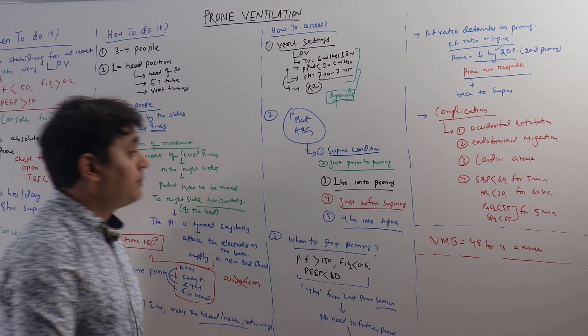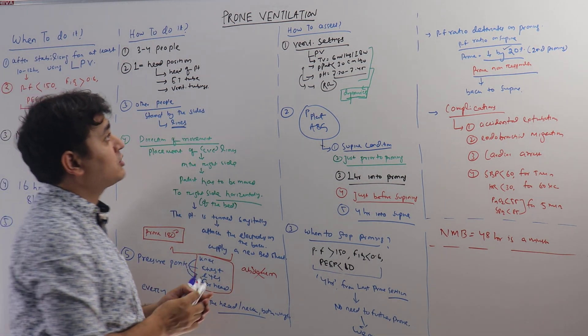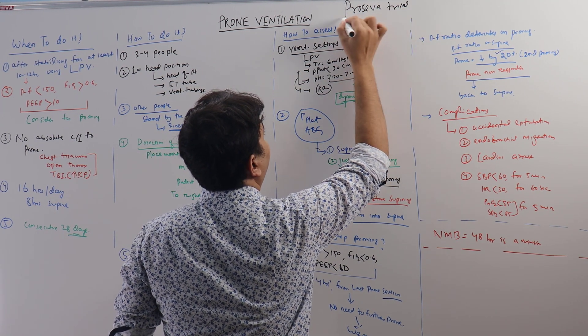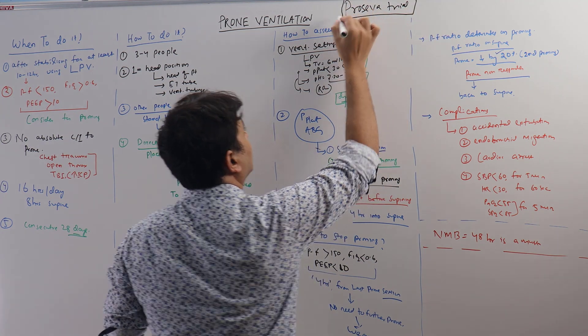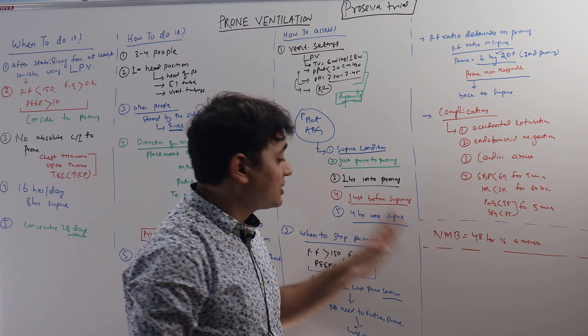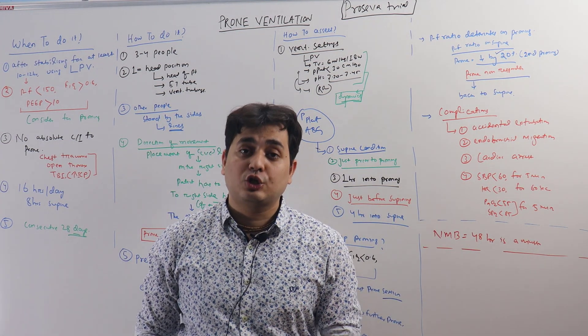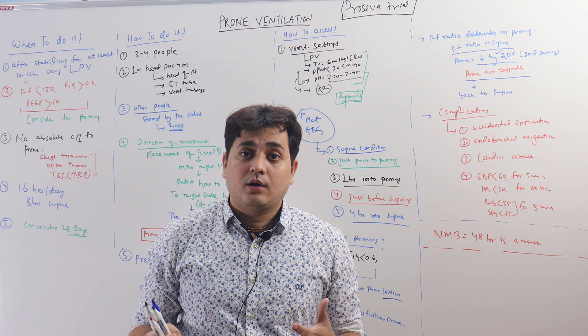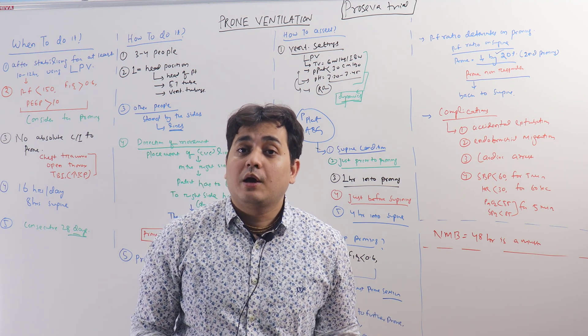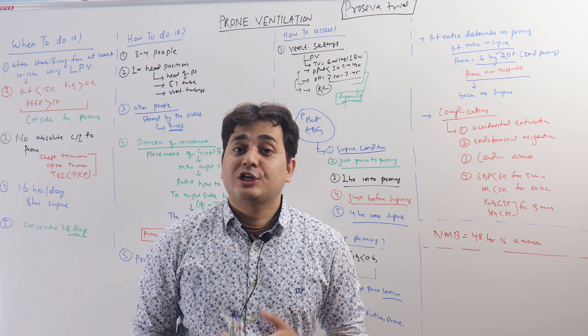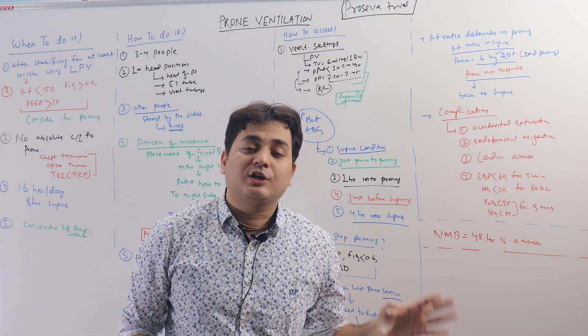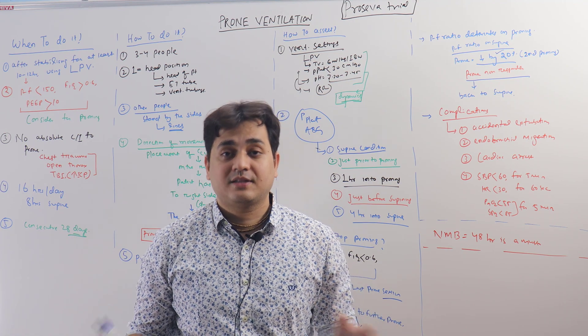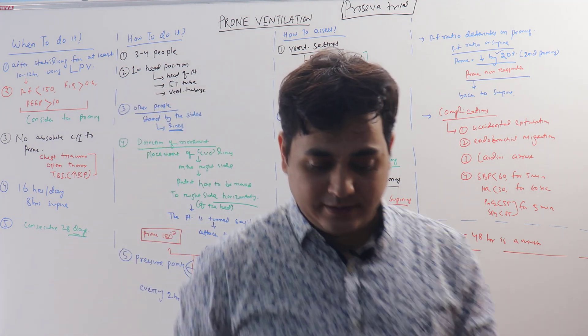Whatever we discussed, all these are based on the very famous trial called the PROSEVA trial. It has shown a significant mortality benefit among patients who are hospitalized for ARDS when they're proned for 16 hours a day for 28 days consecutively. In our patient when you have started on lung protective ventilation but the patient is not benefiting from it, 10 to 12 hours has been passed, this is the best recruitment maneuver that we can do. If your patient can be proned, he should be proned. This is the message from this class. Thank you very much.